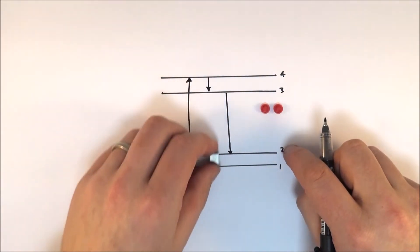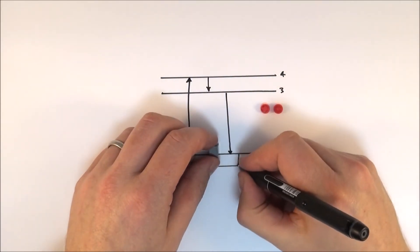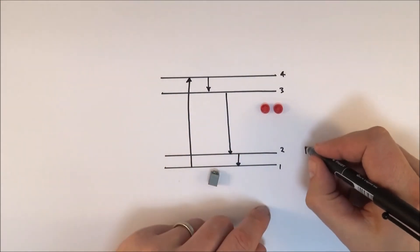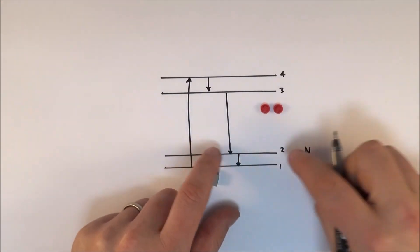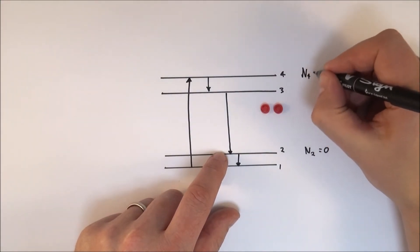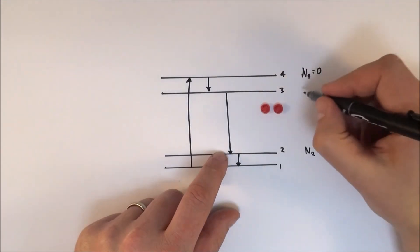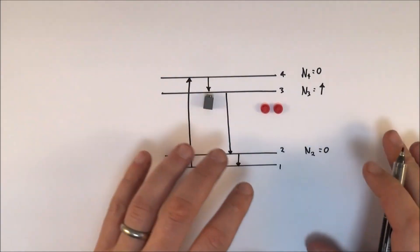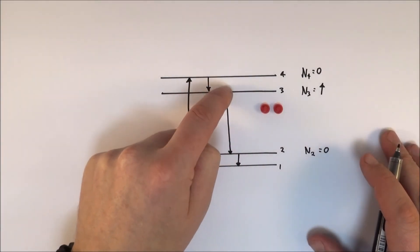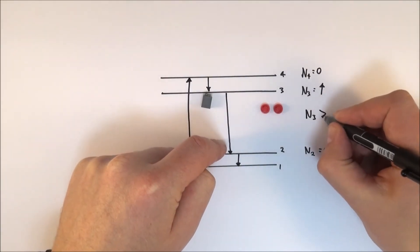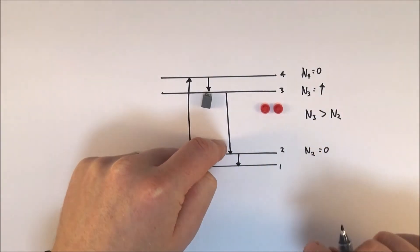And level two, again, it's not a stable phase, and this can then drop back down to level one. So effectively, what we find is that the number of atoms at level two is pretty much zero. The number at level four is also pretty much zero, and that means the number at level three is actually quite high. The big thing about this population inversion is it's the difference between this level and the one beneath it. So N3 is always going to be bigger than N2, because N2 is effectively zero.